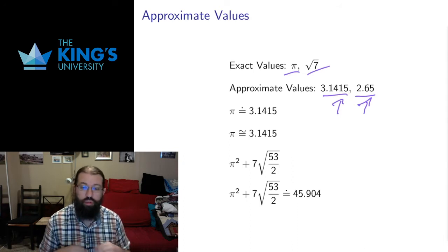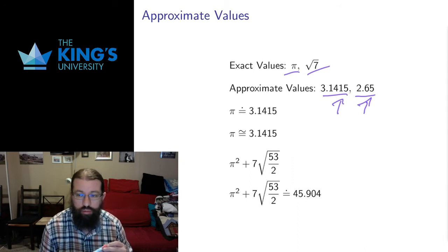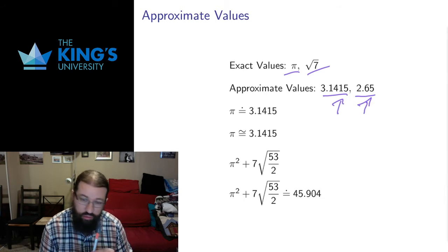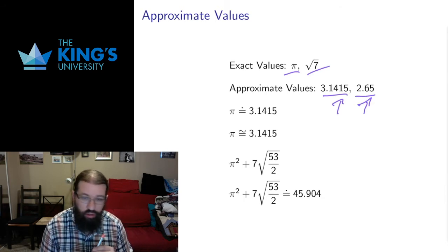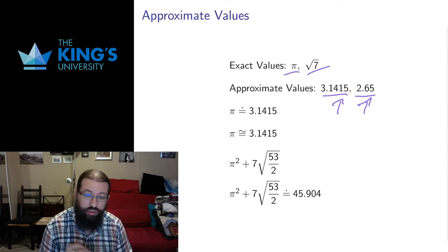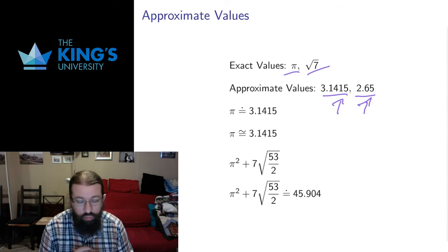But if you do a bunch of arithmetic, a bunch of calculations with approximate values, that error grows. And after even a small number of calculations, 5 or 10, the error can become very large to the point that your calculation is entirely useless. So in those cases, we want to use exact values as long as we can and do the approximations as late as possible, so we don't run into the problem of error propagation.